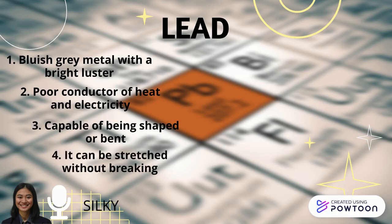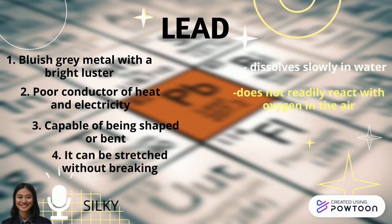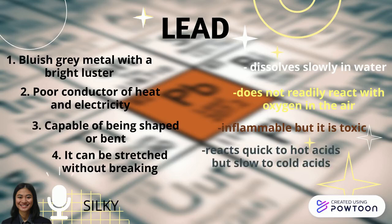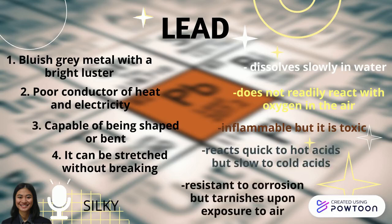For the chemical properties of lead, it dissolves slowly in water and does not readily react with oxygen in the air. It is non-flammable but toxic. It reacts quickly to hot acids but slowly to cold acids, and is resistant to corrosion but tarnishes upon exposure to air.